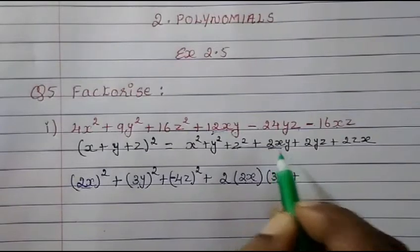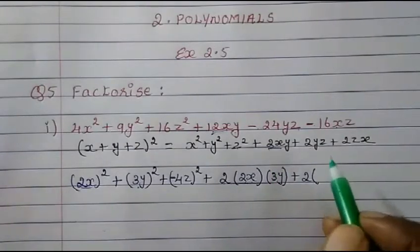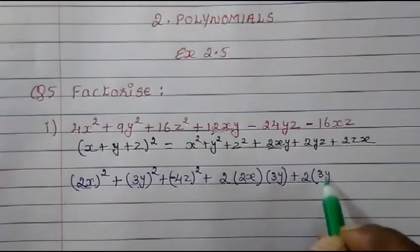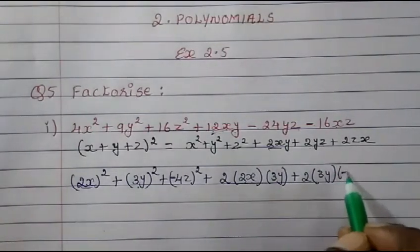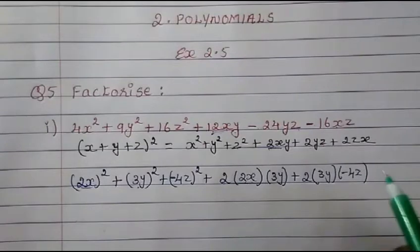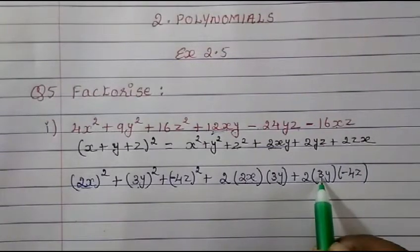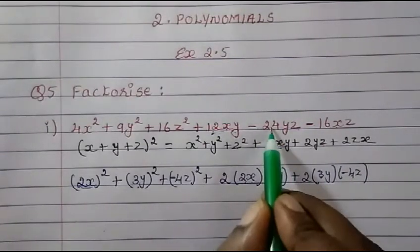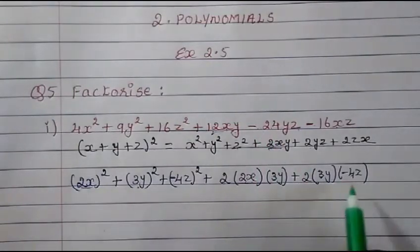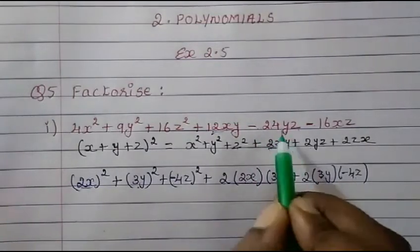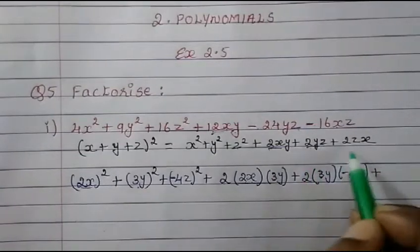Now let's do the 2yz part. In the place of y we have 3y, and in the place of z we have minus 4z. So 2 times 3y times (−4z): 2 threes are 6, 6 fours are 24, so we get negative 24yz. That part is now finished.